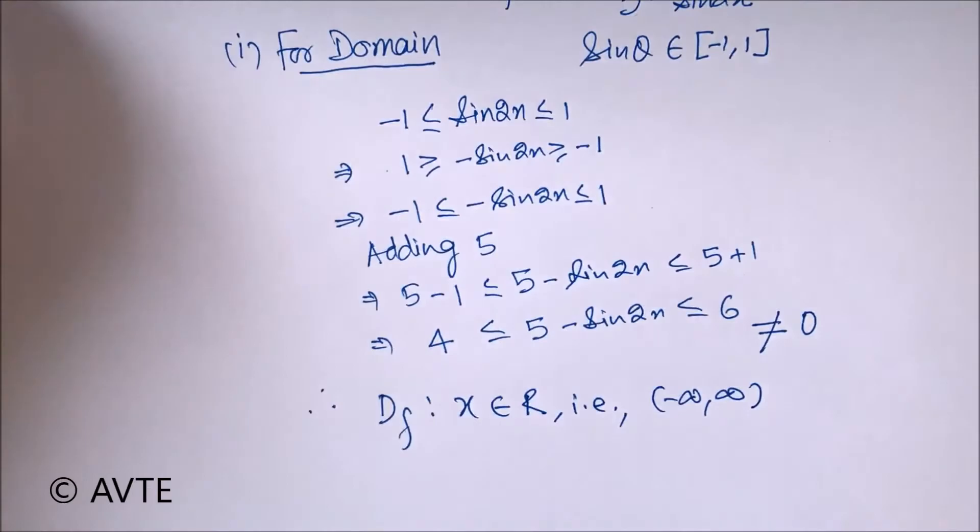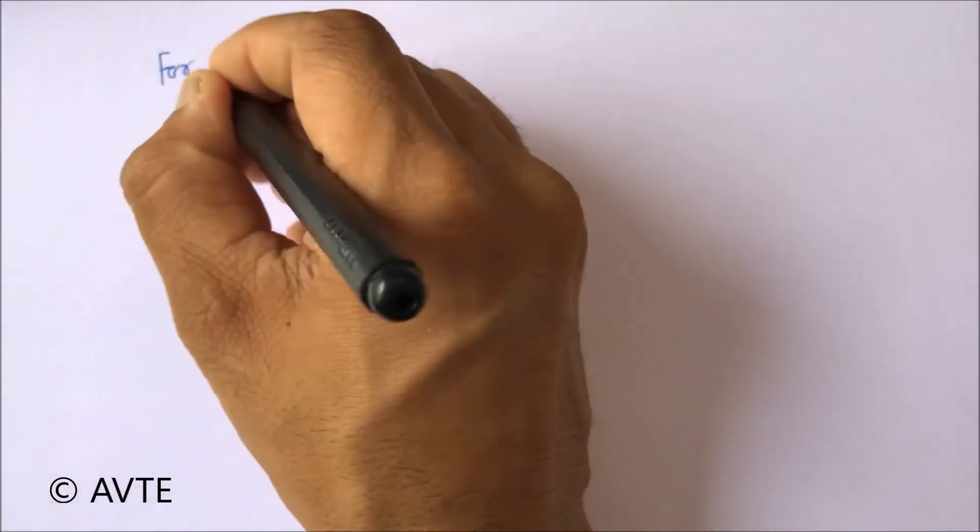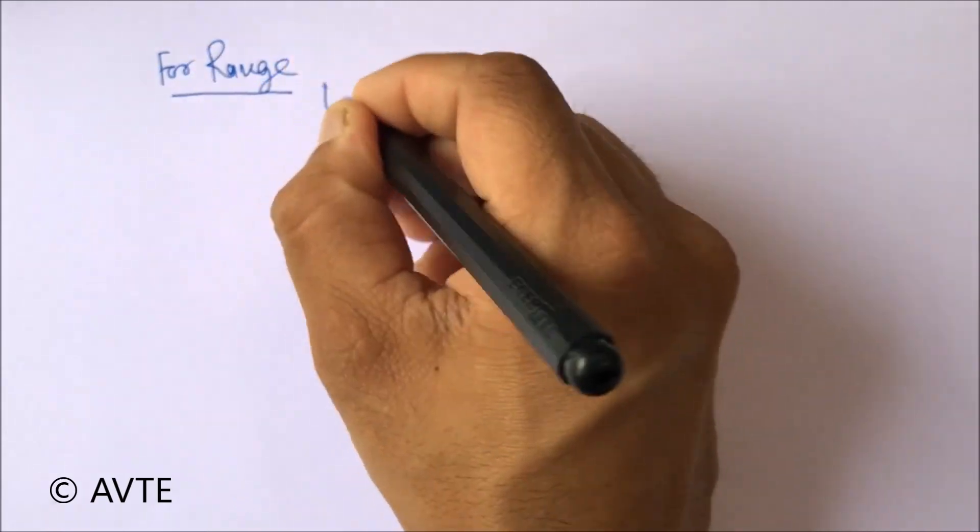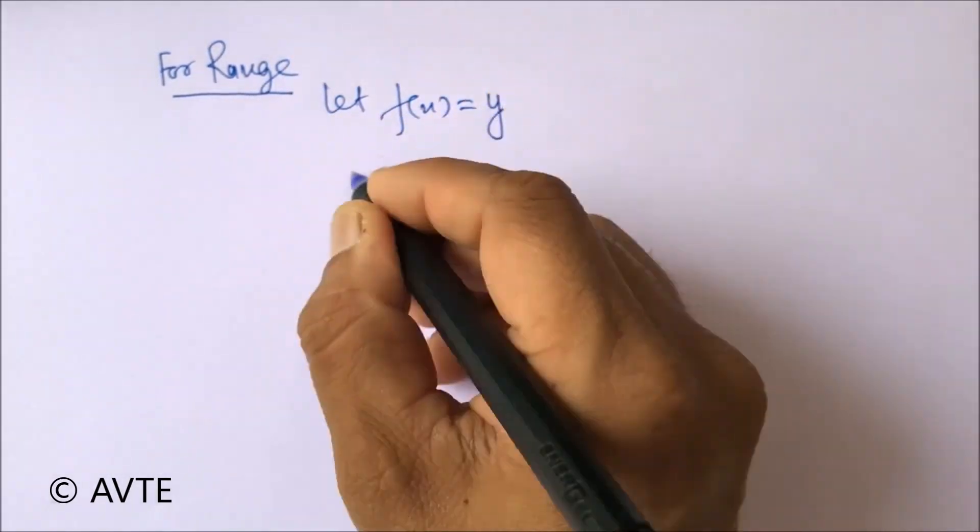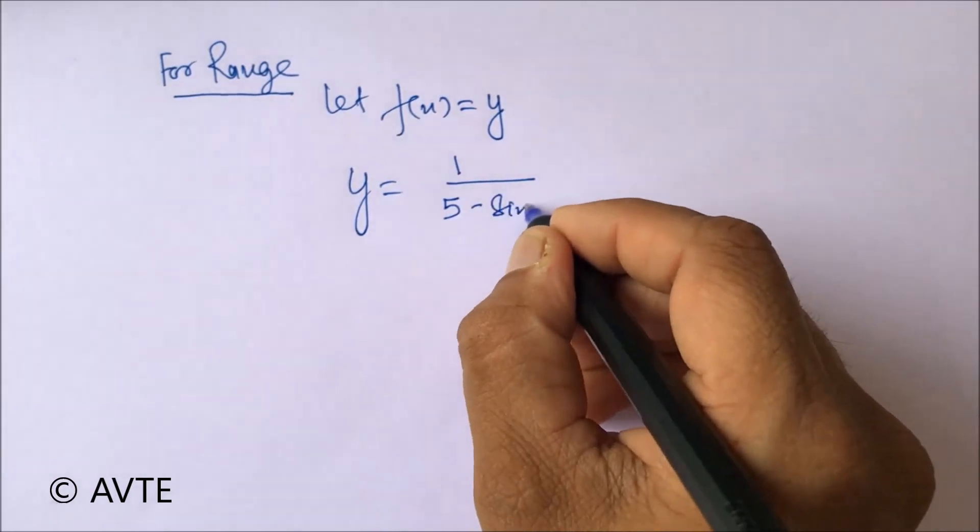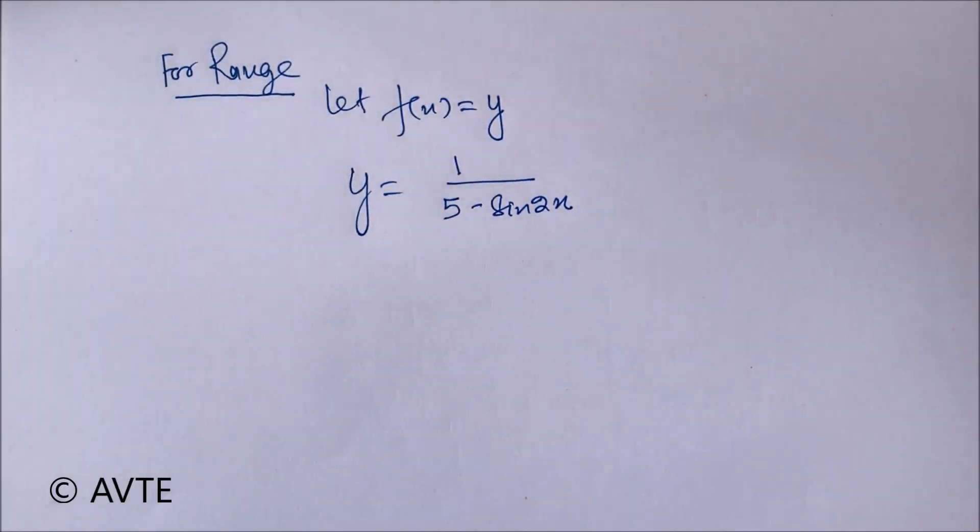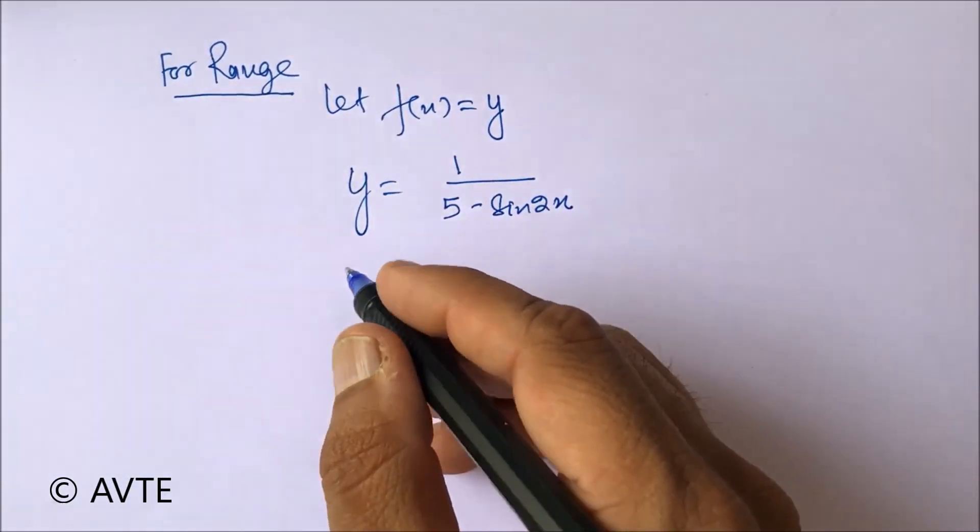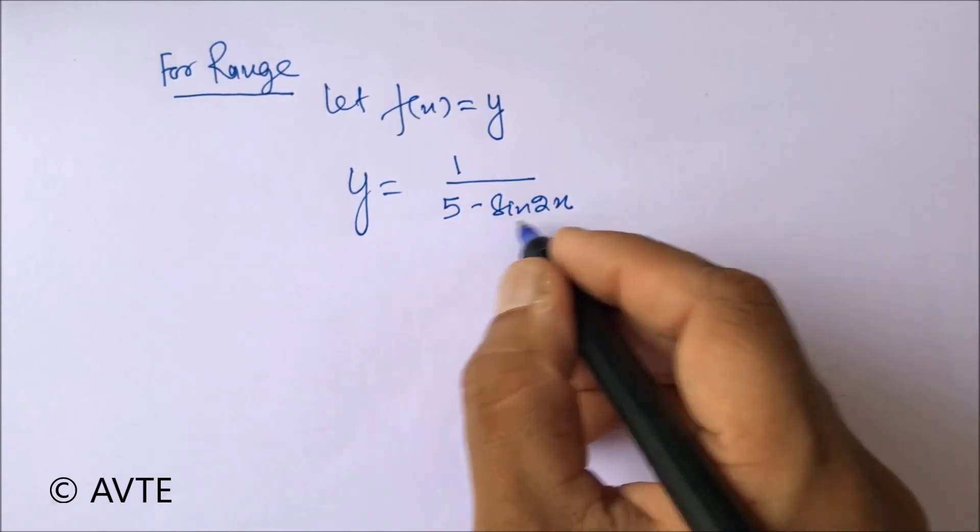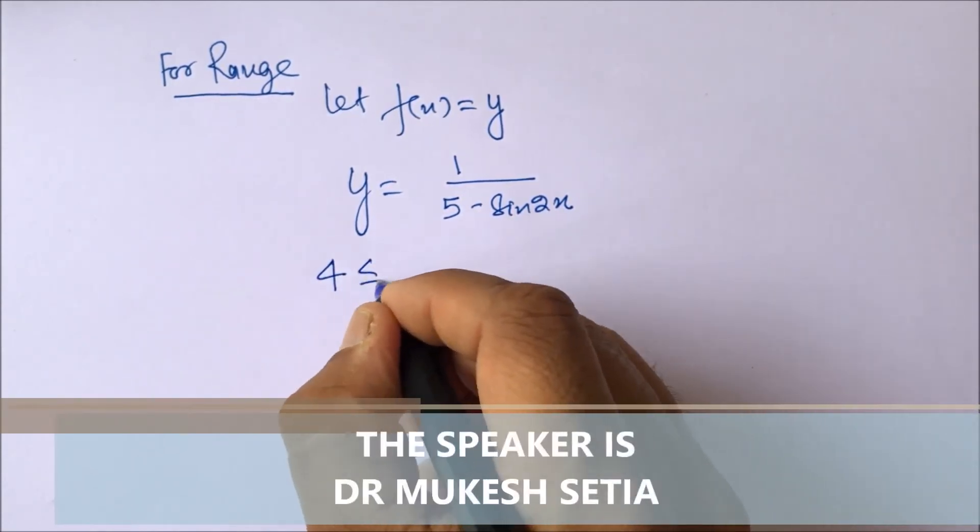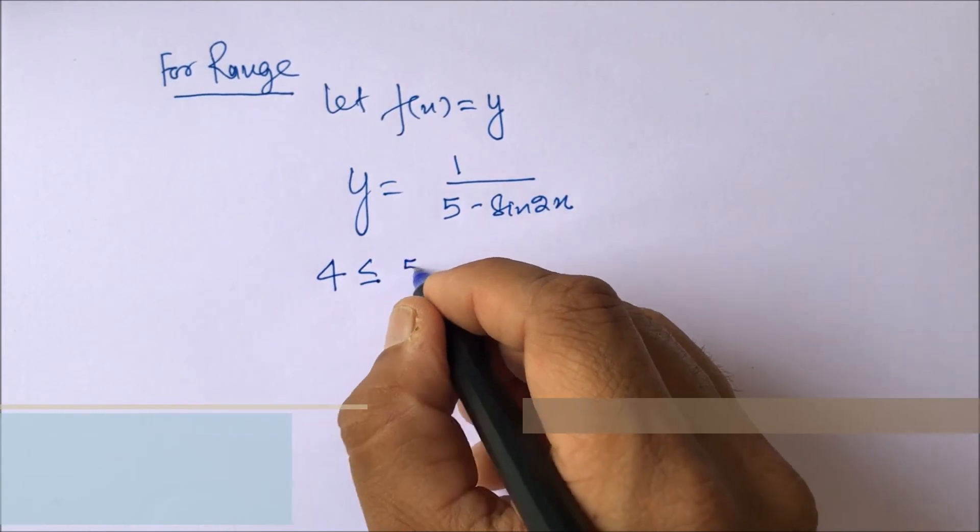Now, coming to the range. When we were finding the domain, you remember that five minus sine 2x was from four to six.